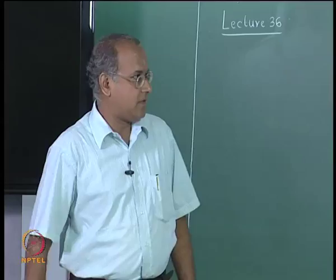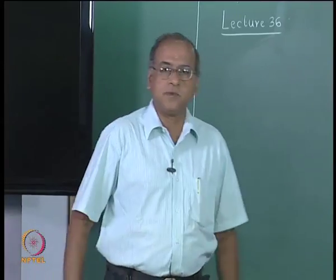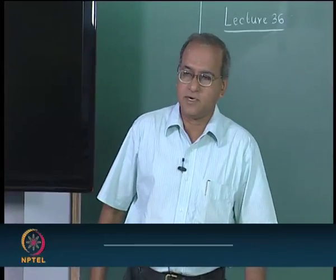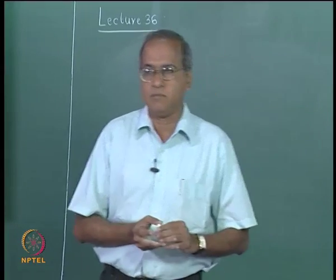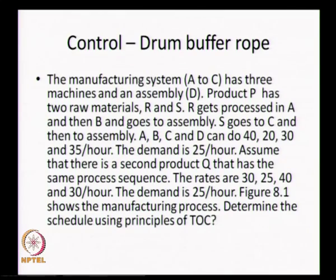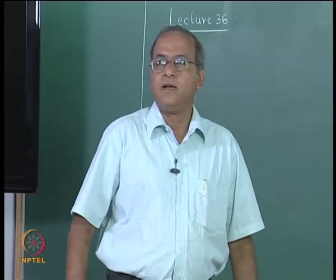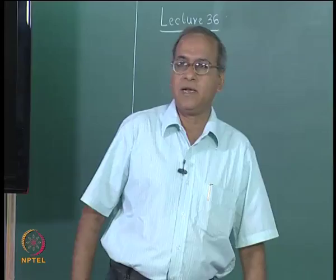In this lecture, we look at the principles of drum buffer rope, which act as a control mechanism in synchronous manufacturing. We explain the ideas of the drum buffer rope system through an example. We have a manufacturing system A to C, with three machines A, B, and C, and an assembly D.